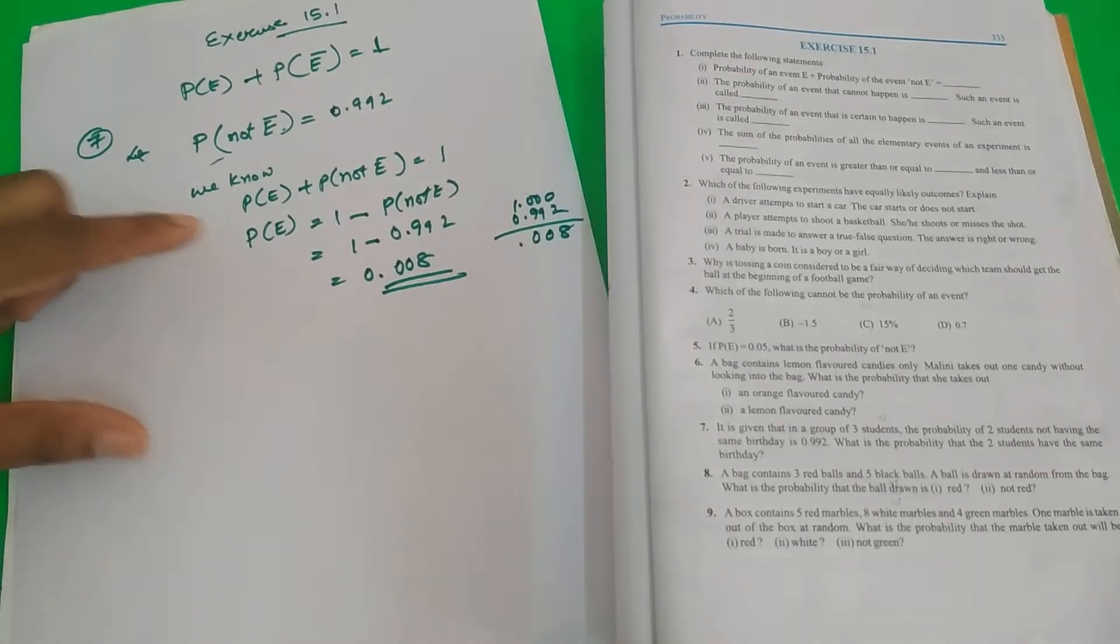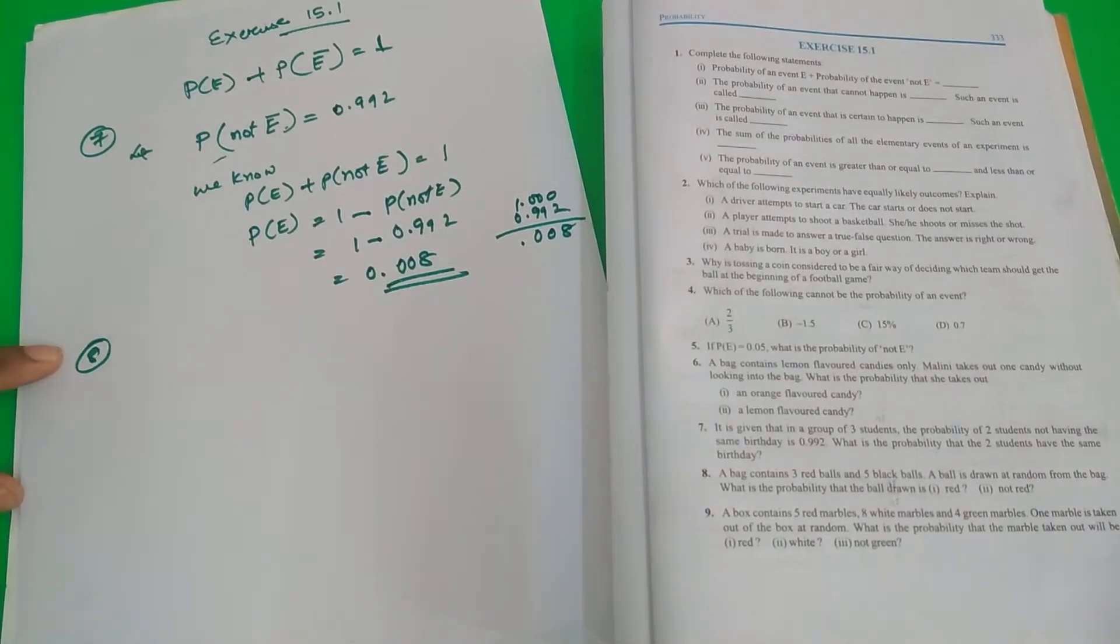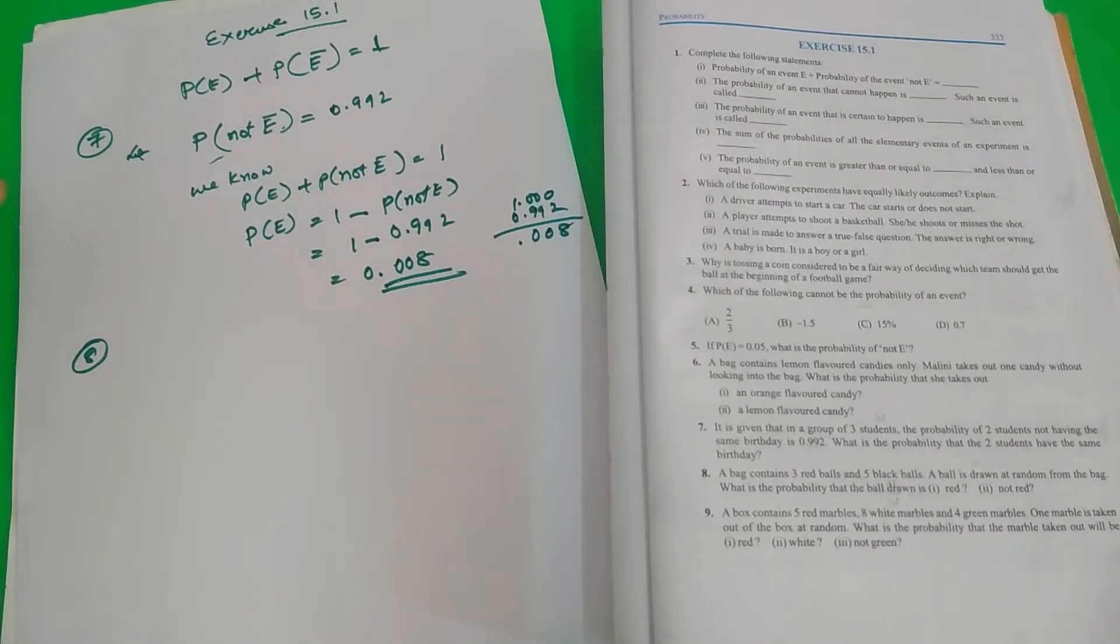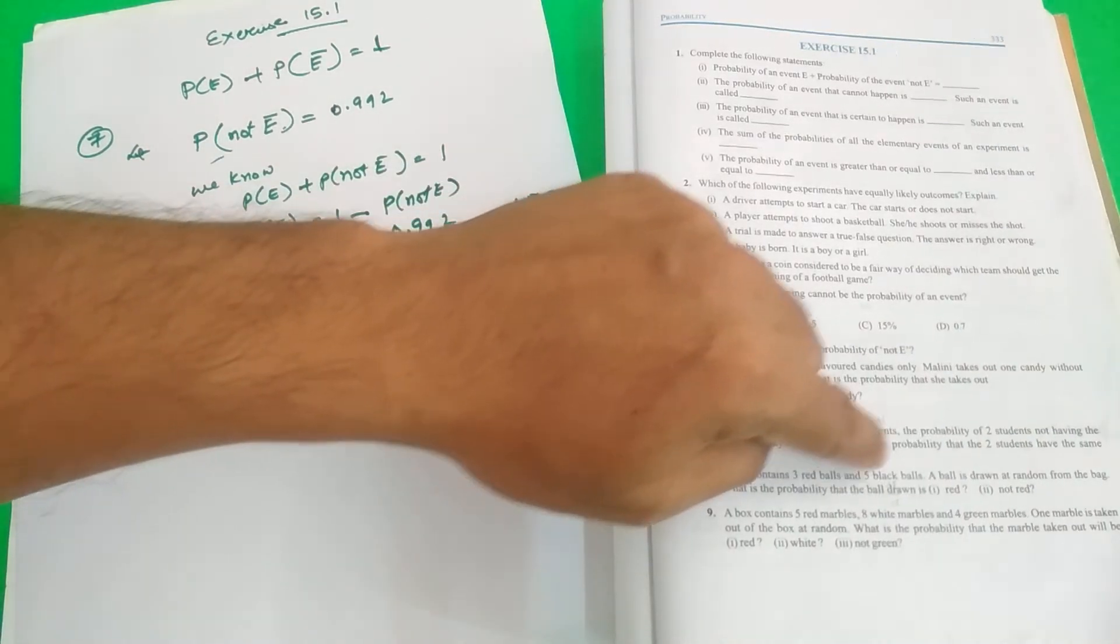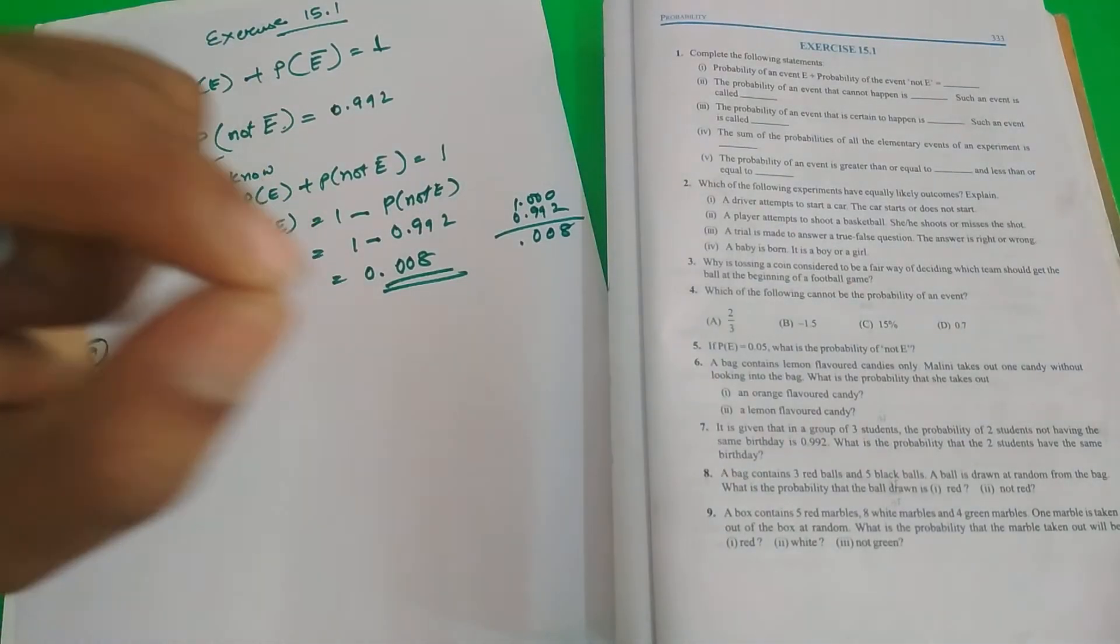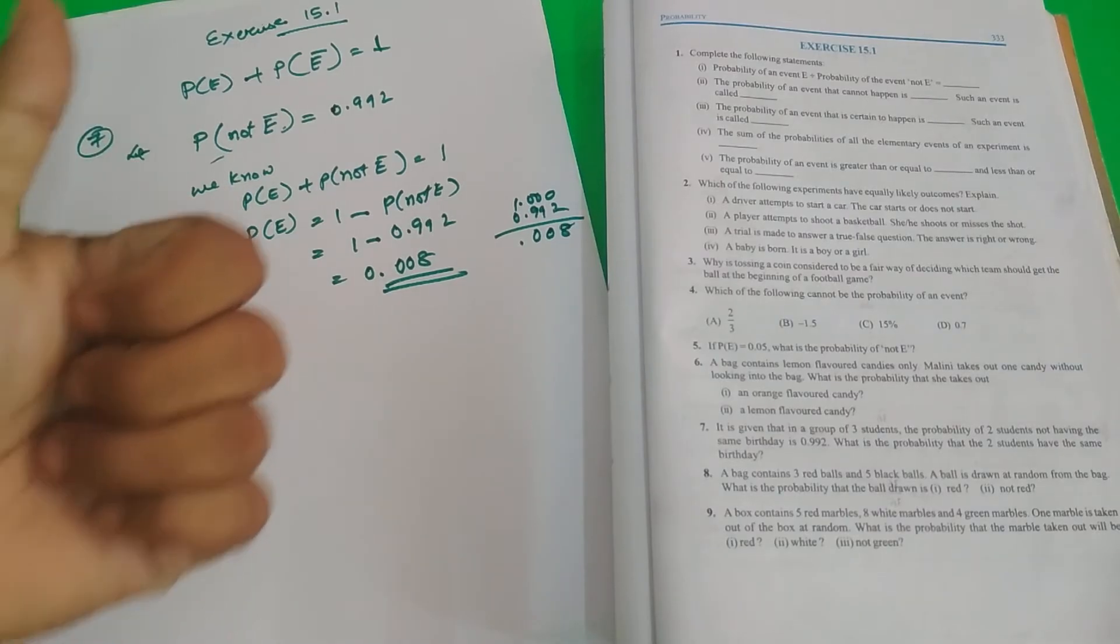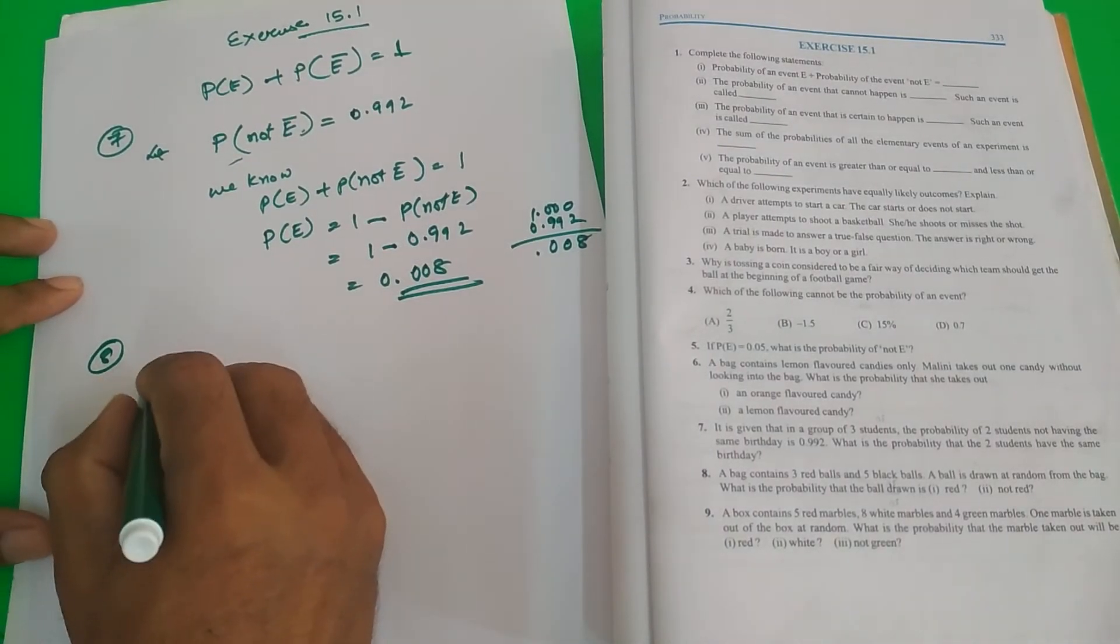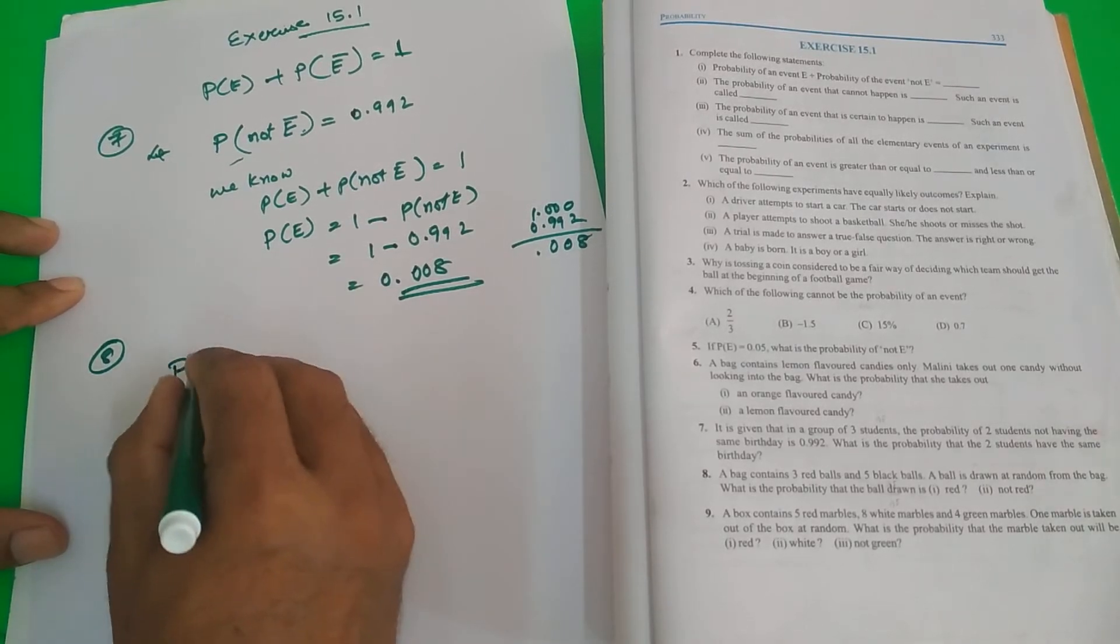Next, we have question number 8. You know the detailed solutions, I will provide you the PDF. You can go through it. A bag contains 3 red balls and 2 black balls. A ball is drawn at random from the bag. What is the probability that the ball drawn is red? I am doing it directly. Please listen carefully.